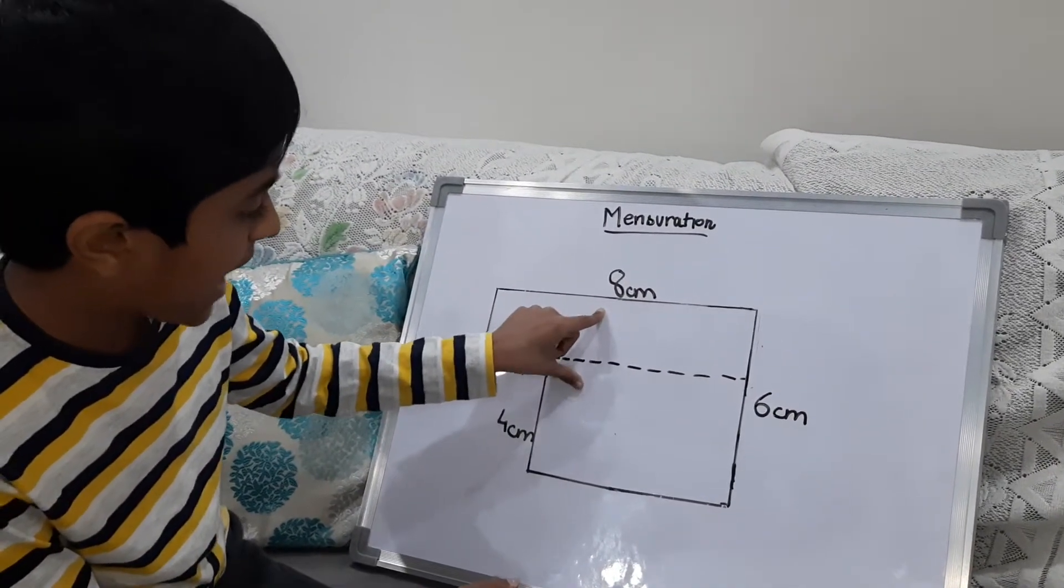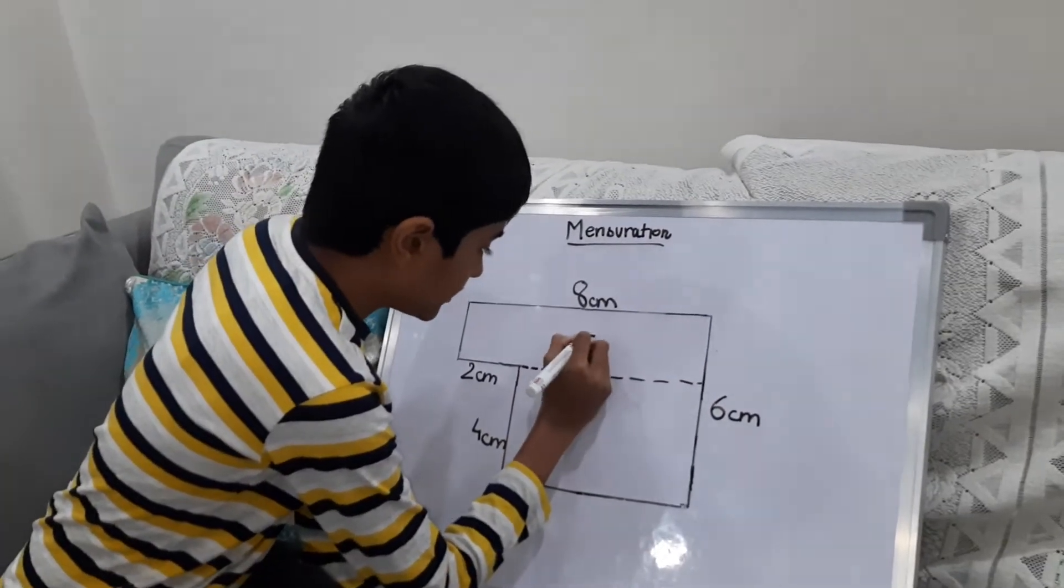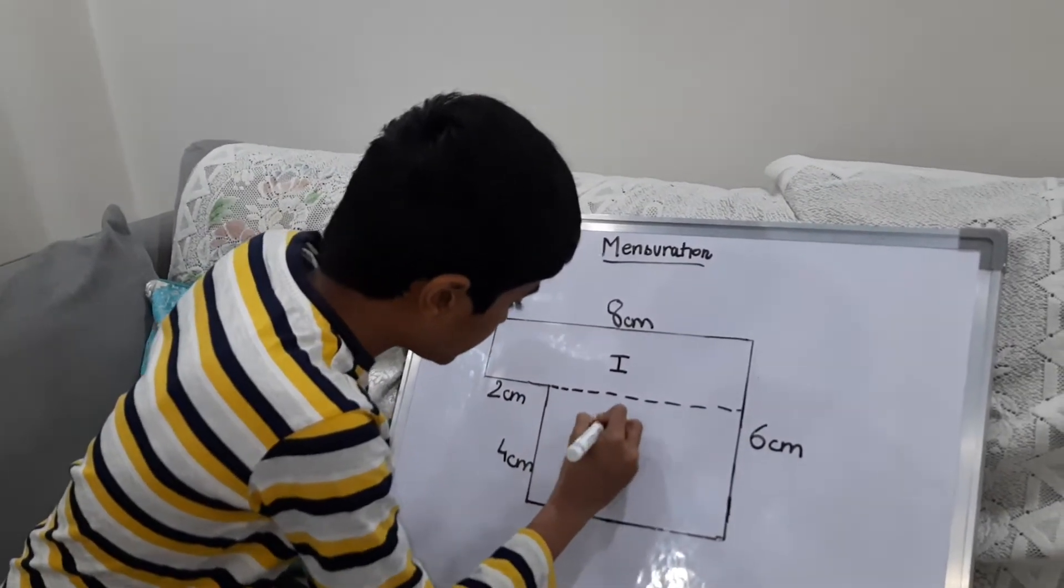Now we will have to name these two rectangles. This rectangle name will be rectangle 1 and this will be rectangle 2.